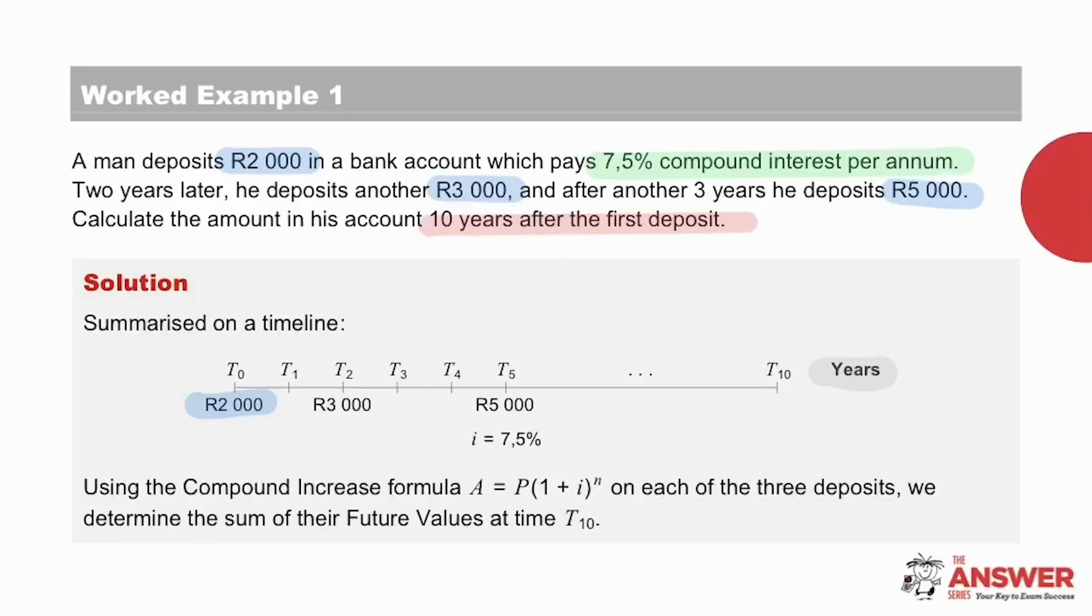Two years later at T2, R3000 is deposited and three years later at T5, R5000 is deposited. We also include the interest rate on the timeline for reference.